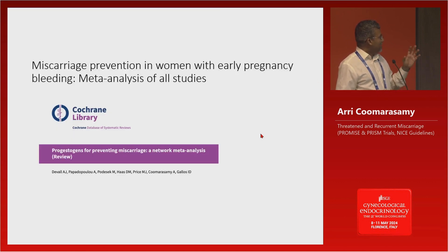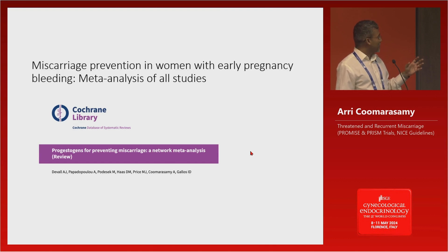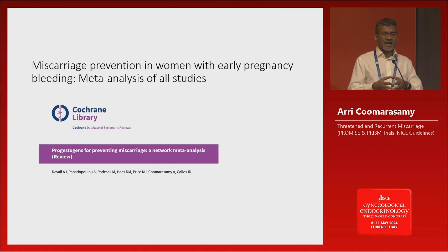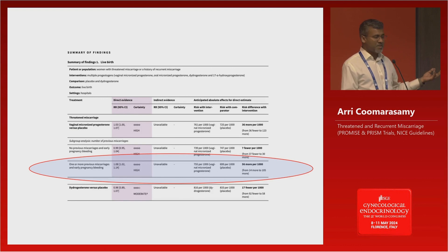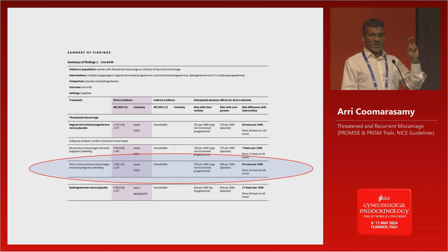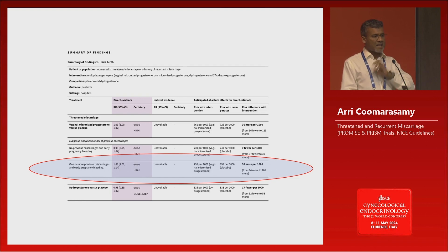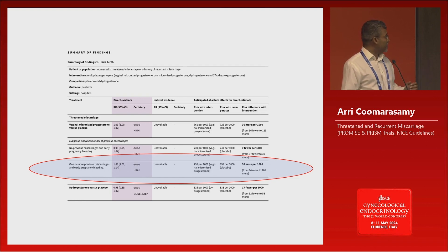We went on to do a network meta-analysis, and because the network meta-analysis permitted only trustworthy studies, there were only a few studies included, and that again confirmed this — in those who have the dual risk factors of previous miscarriage and current pregnancy bleeding, there is a benefit from progesterone.